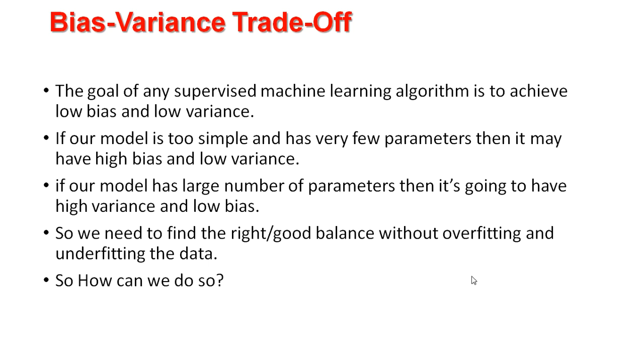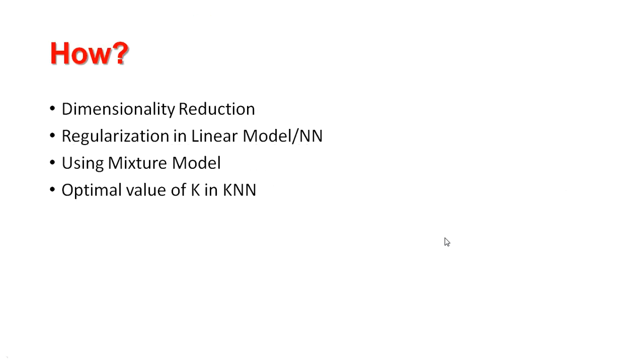Now the question is, how can we do this? There are some particular ways which we can apply. The important methods are dimensionality reduction, which we can use to reduce multiple dimensions; regularization in linear regression or neural network; using a mixture model where we can use two models and train them together; and if we use K-nearest-neighbor, then we can select the optimal K value. These are basically some ways by which we can get the right or balanced way to reduce the error and find the bias-variance trade-off.